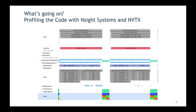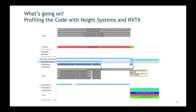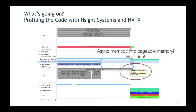In the profile timeline, you can see the forward and backward passes with all the convolution calls. Critically, DALI is not overlapping with the forward/backward pass — that's bad. There's also a large gap between iteration steps, and a cudaMemcpyAsync call spanning the whole block highlighted in red. At the end of that long region, there is a memcpy from device to host into pageable memory, which is blocking — a serious issue.